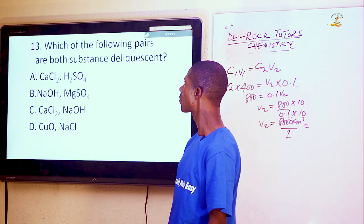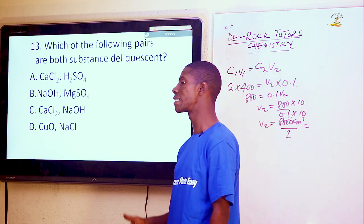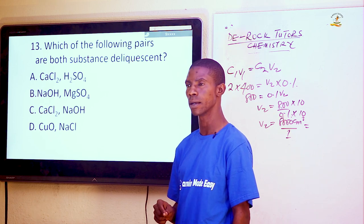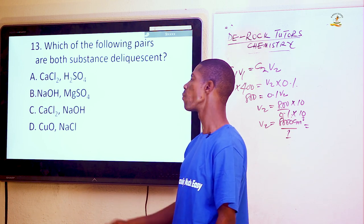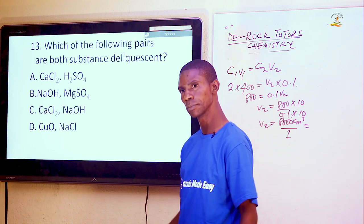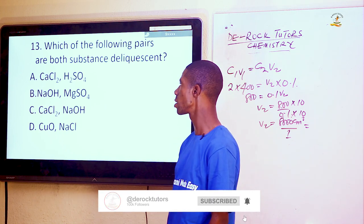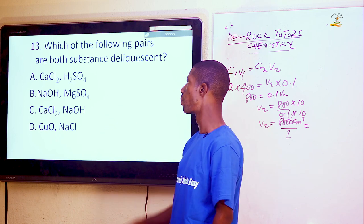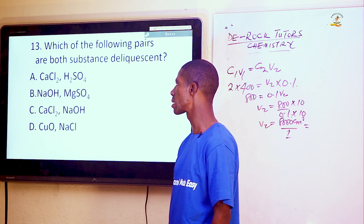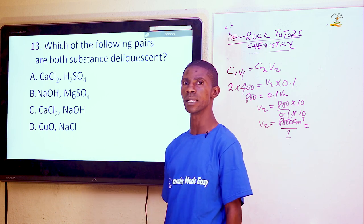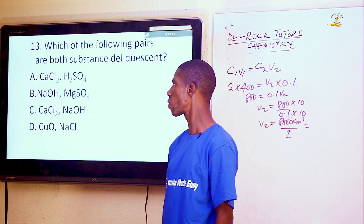Question 13: Which of the following pairs are both deliquescent substances? A substance can be deliquescent, efflorescent, or hygroscopic. A deliquescent substance absorbs moisture from the atmosphere and dissolves in it to form a solution. Calcium chloride and aluminium sulphate are both hygroscopic, but sodium hydroxide and magnesium nitrate are both deliquescent — option B.